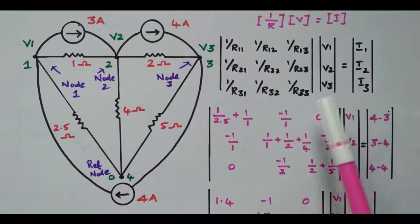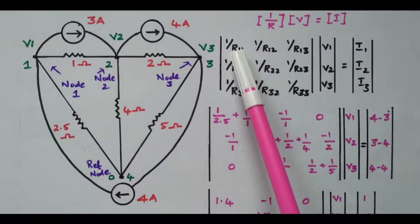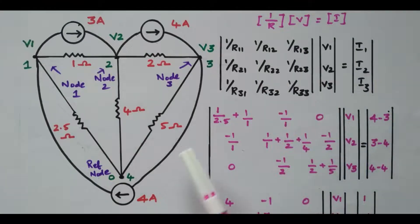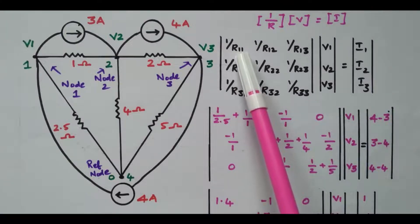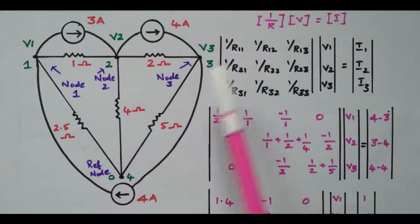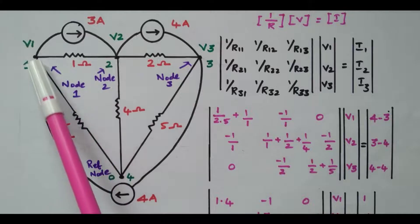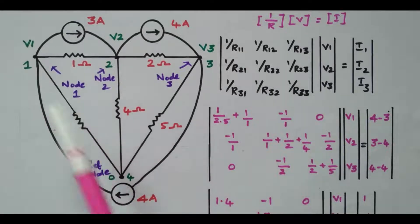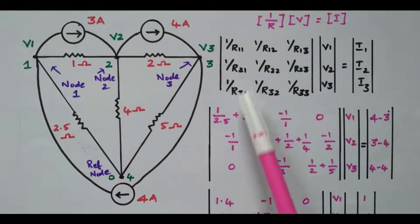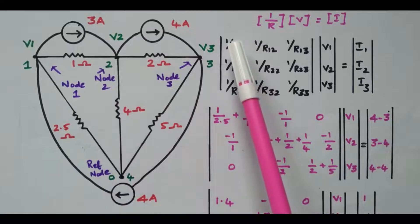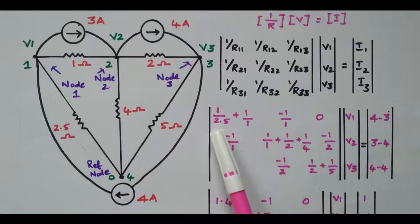The resistance matrix contains elements like 1/R11, 1/R12, 1/R13, and so on. First, consider the resistance matrix. R11 is nothing but the sum of resistors connected at node 1. The resistors connected at node 1 are the 1 ohm and the 2.5 ohm. So 1/R11 = 1/2.5 + 1/1.